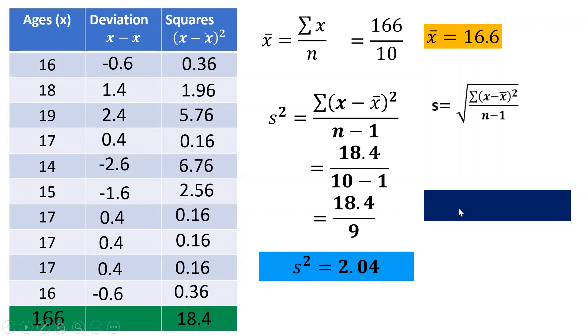To find the standard deviation, just take the square root of the variance. The square root of 2.04 is 1.43.